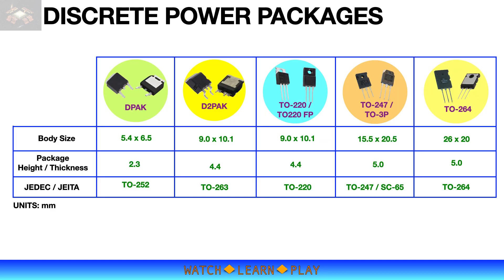Popular discrete power packages are shown on the table. For surface mount applications, DPAK and D2PAK are the more popular packages. Both packages have exposed pads for better heat dissipation. DPAK is smaller of the two packages, and D2PAK can accommodate larger chip sizes. TO220 is one of the most popular through-hole power packages. It has an equivalent body size as D2PAK, but being a through-hole package allows it to be mounted onto an external heatsink. There are several variations of TO220 package per JEDEC standard, and a full-pack or fully-molded version is also available.